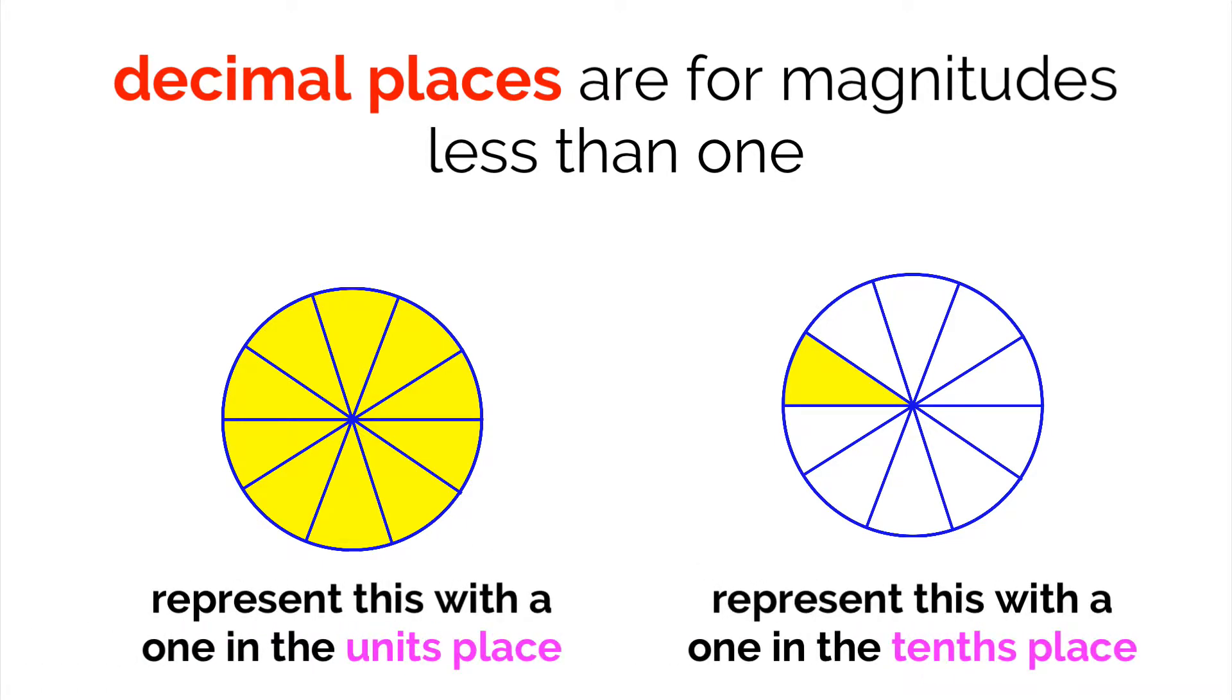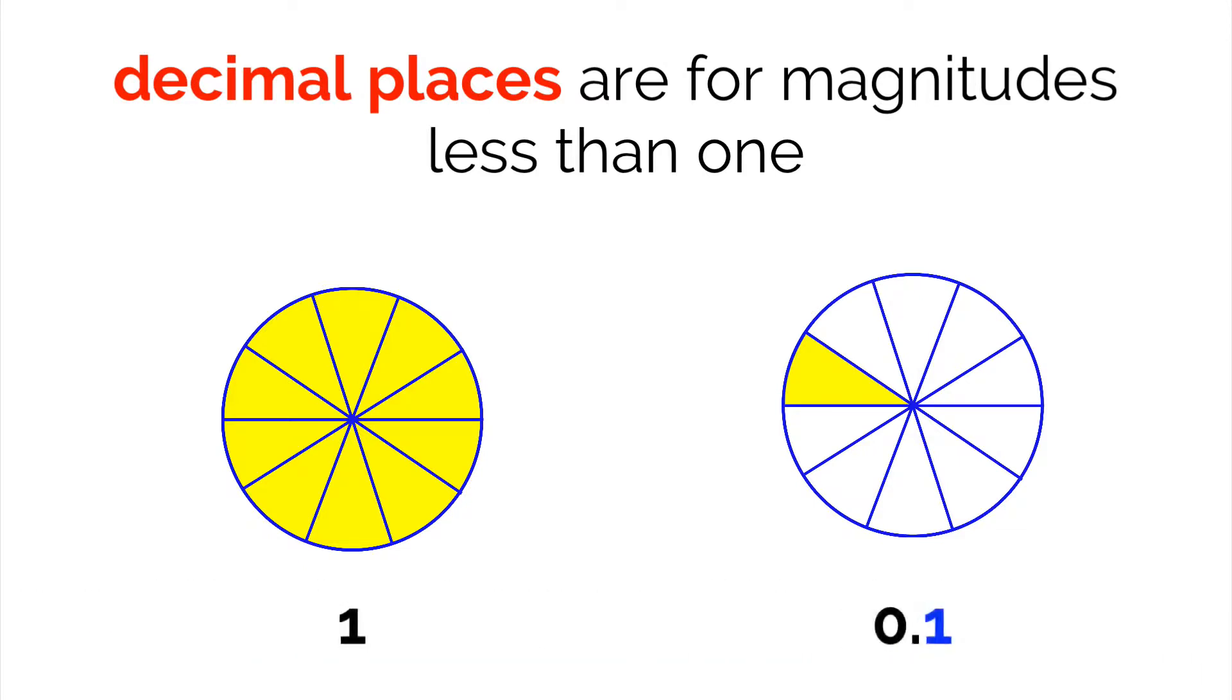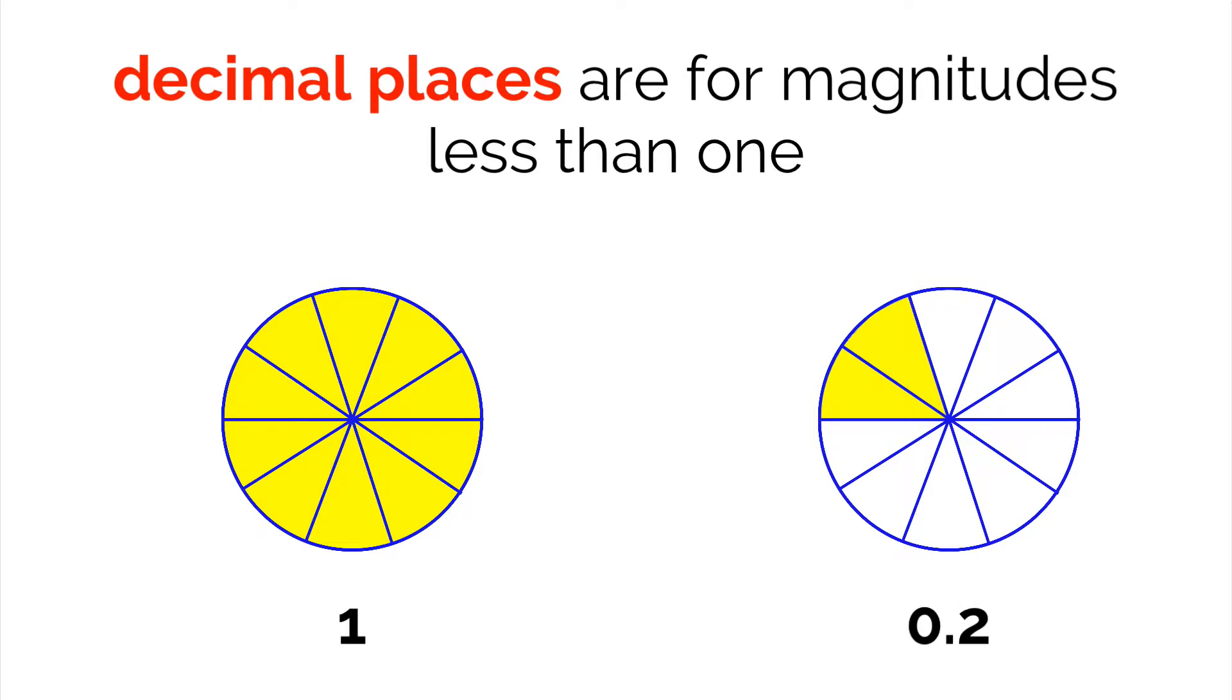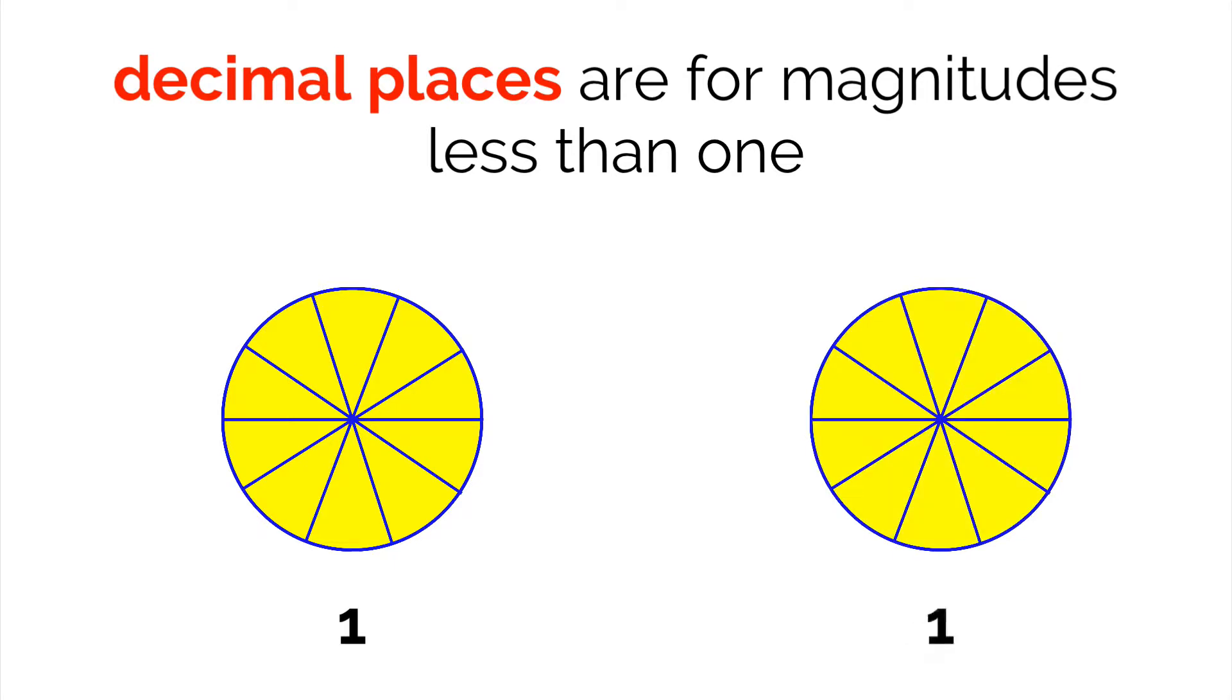There certainly is. All we have to do is extend the place values we know to represent these fractions of 1 as well. This is achieved with the decimal point. Instead of calling one slice 1 tenth, we can call it 0.1, since this is the tenths place. Two slices would be 0.2, all the way up to 10 slices which would give us one whole pizza.